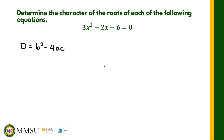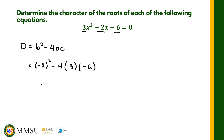The given equation is already in standard form, so we can immediately substitute the values: a equals 3, b equals negative 2, and c equals negative 6. Therefore the discriminant equals negative 2 squared minus 4 times 3 times negative 6. Negative 2 squared is 4, and 4 times 3 times 6 gives us positive 72, which equals 76.